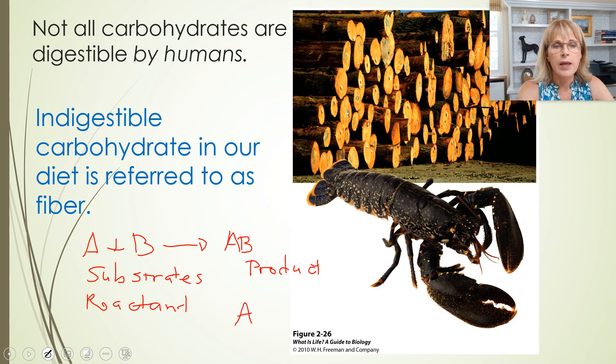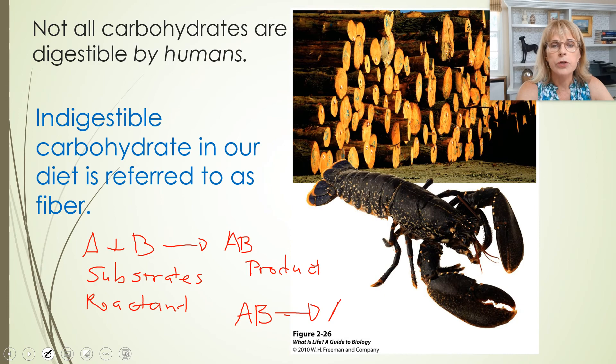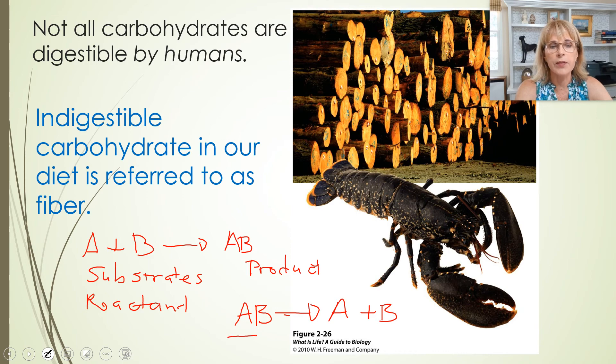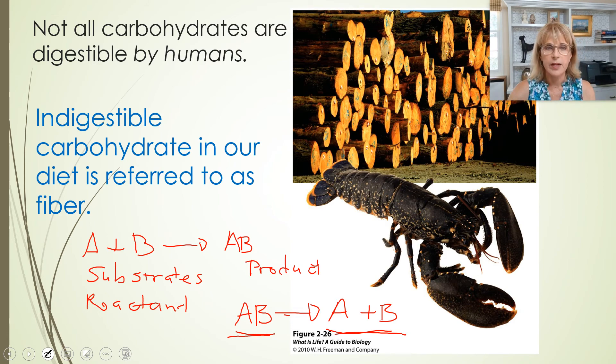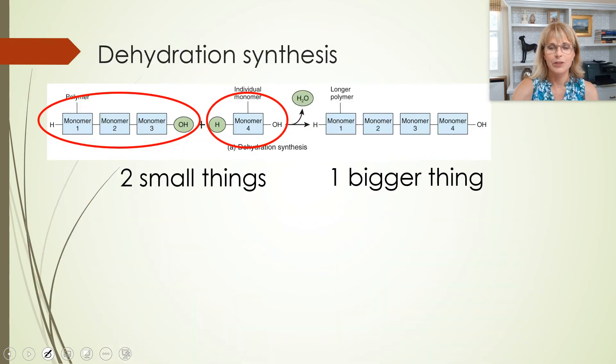But before we leave this, I should tell you that if I could also say A plus B turns into A and B. And again, in this formula, the stuff on the left would be the substrate and the stuff on the right would be the products. So stuff on the left, substrates, reactants, stuff on the right, product. The arrow divides it, magic happens.